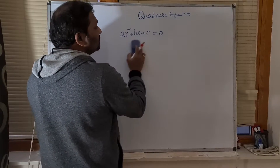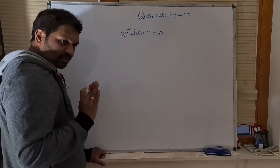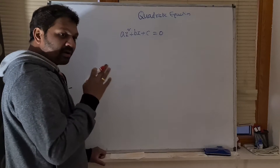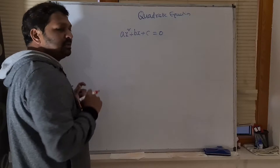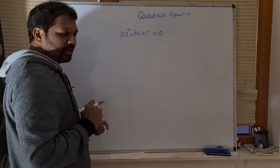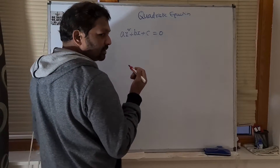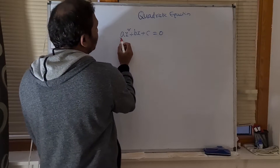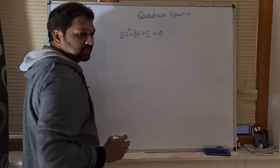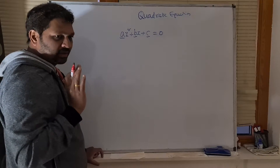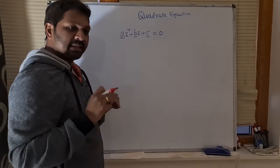A quadratic equation should be in this form — Ax² + Bx + C = 0. Even if it is not in this form, you have to see if you can convert it into this form. Here, A is a constant, B is a constant, and C is a constant — some numbers. X is a variable.